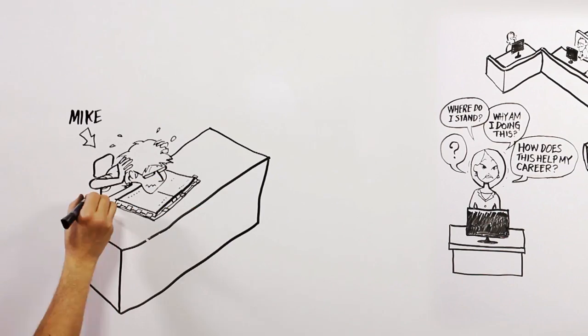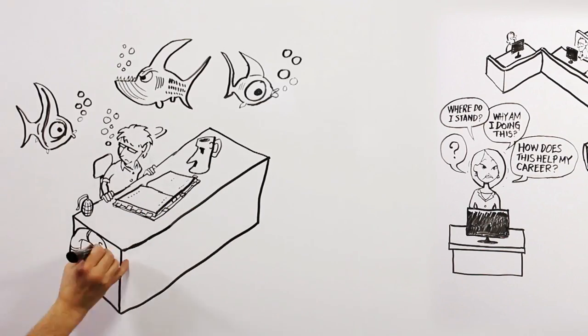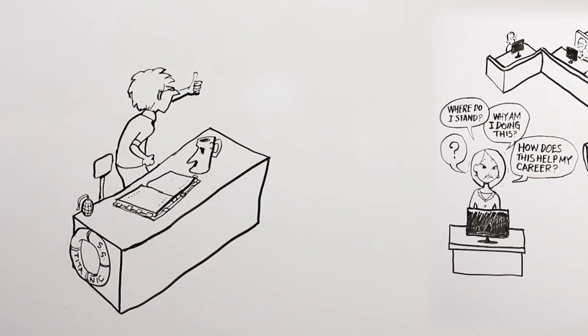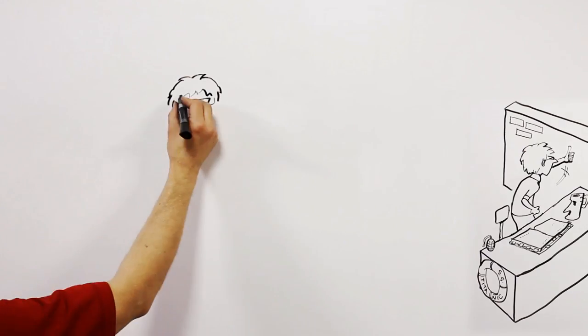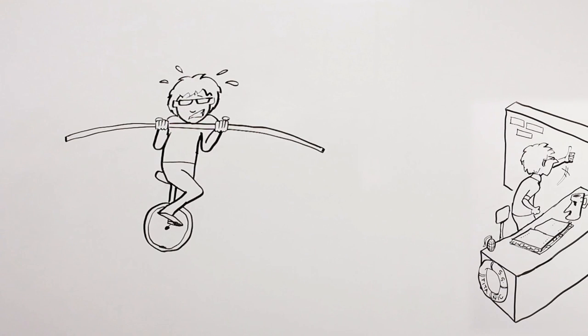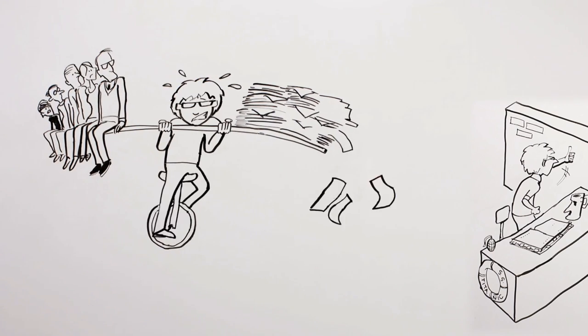Meanwhile, Mike, Jessica's manager, is feeling underwater. He wants his team to do well, but it takes more time than he's got to stay on top of what everyone's doing. It's hard to balance coaching his team with getting his own work done.